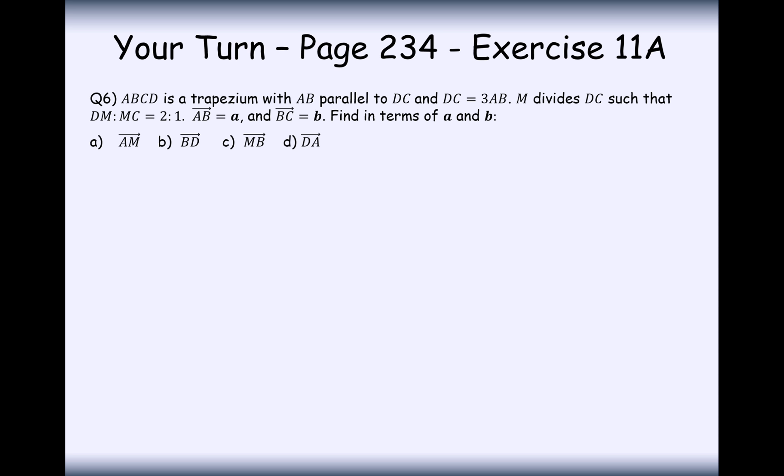Let's have a go at this question. ABCD is a trapezium. AB is parallel to DC. DC equals 3AB. So it's going to look roughly like this: A, B, C, D. The order the letters are written is the order you should draw your triangle in.